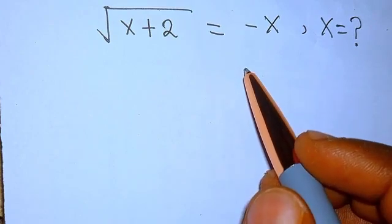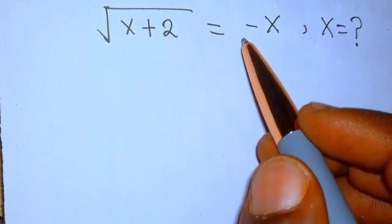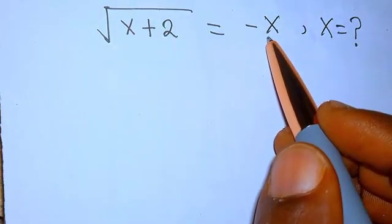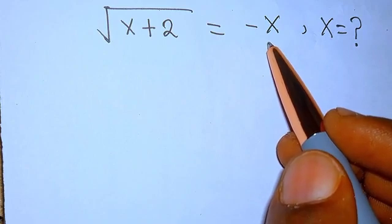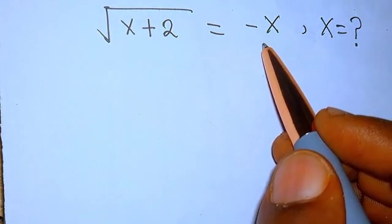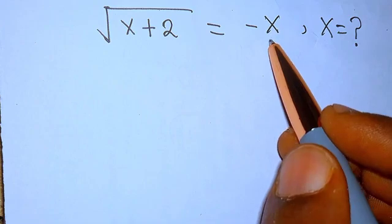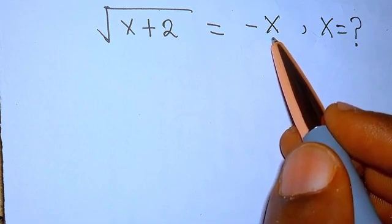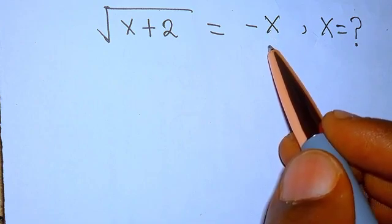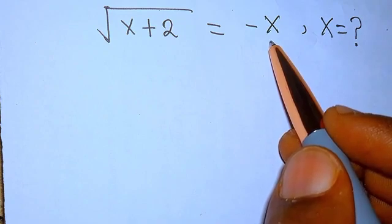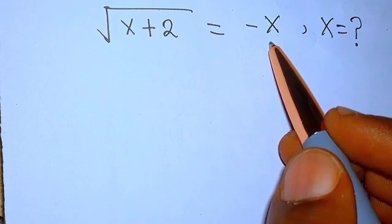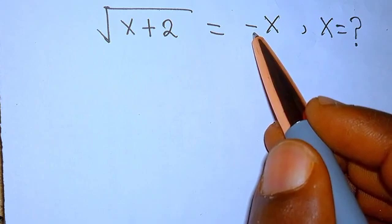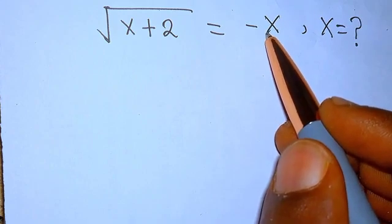We truly do have a solution. We would not have a solution if the right hand side were just a constant like one, two, or three. But x is a variable — if x happens to be a negative number, say minus one, minus two, or minus three, then the minus cancels the minus and you get a positive.